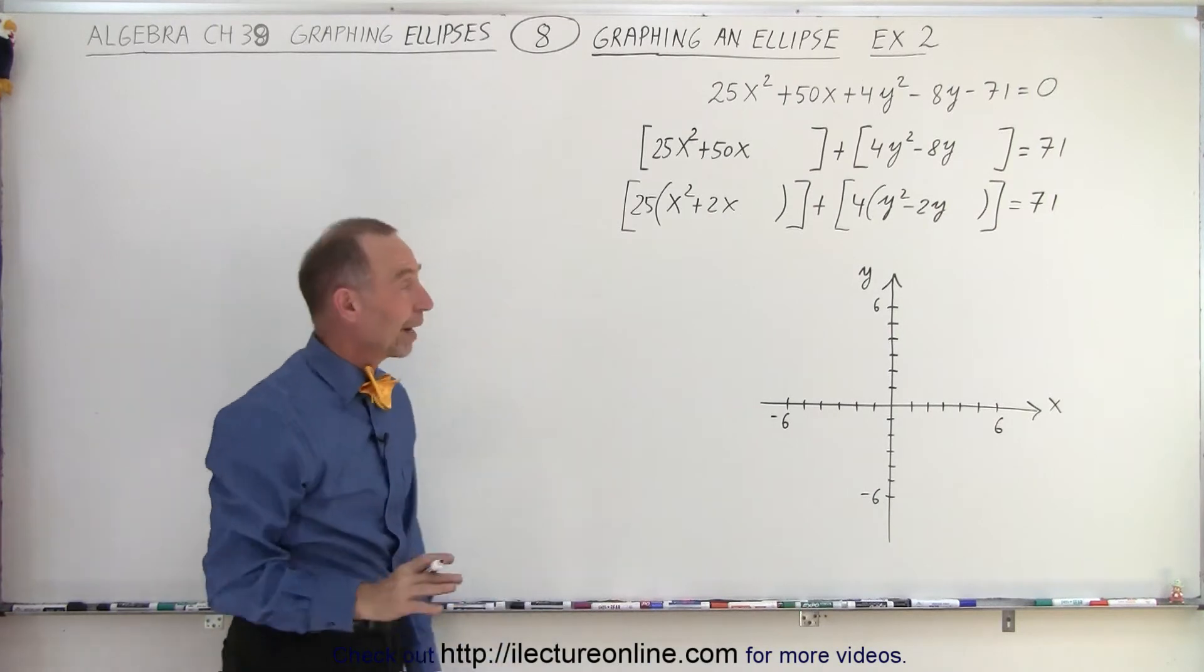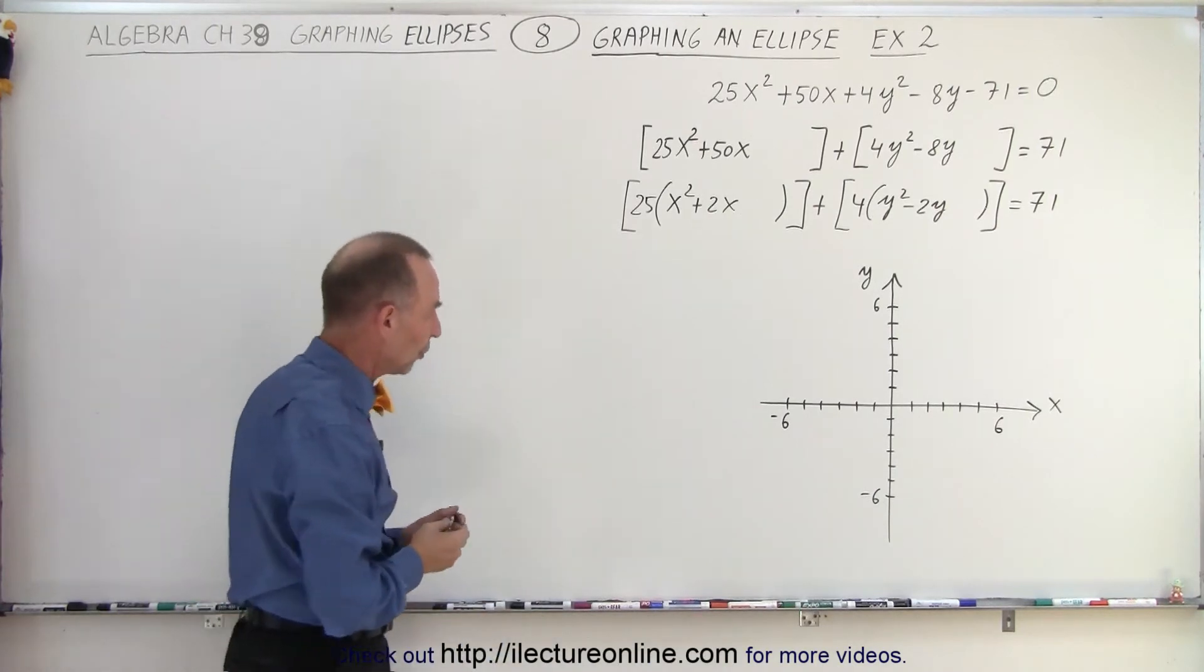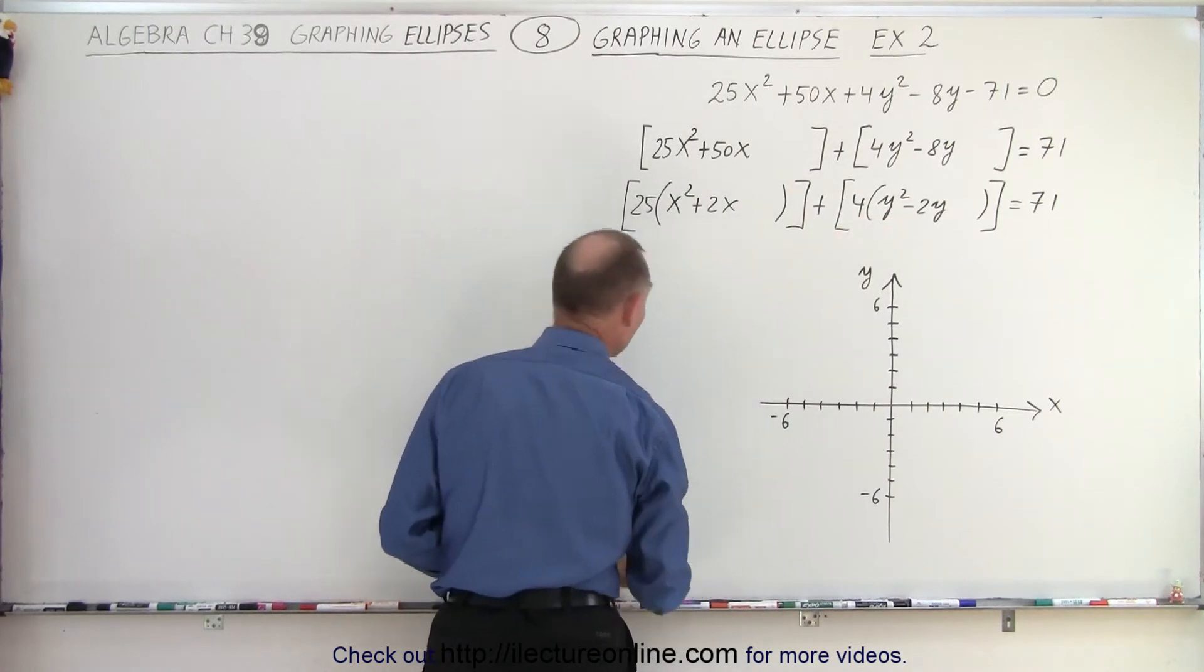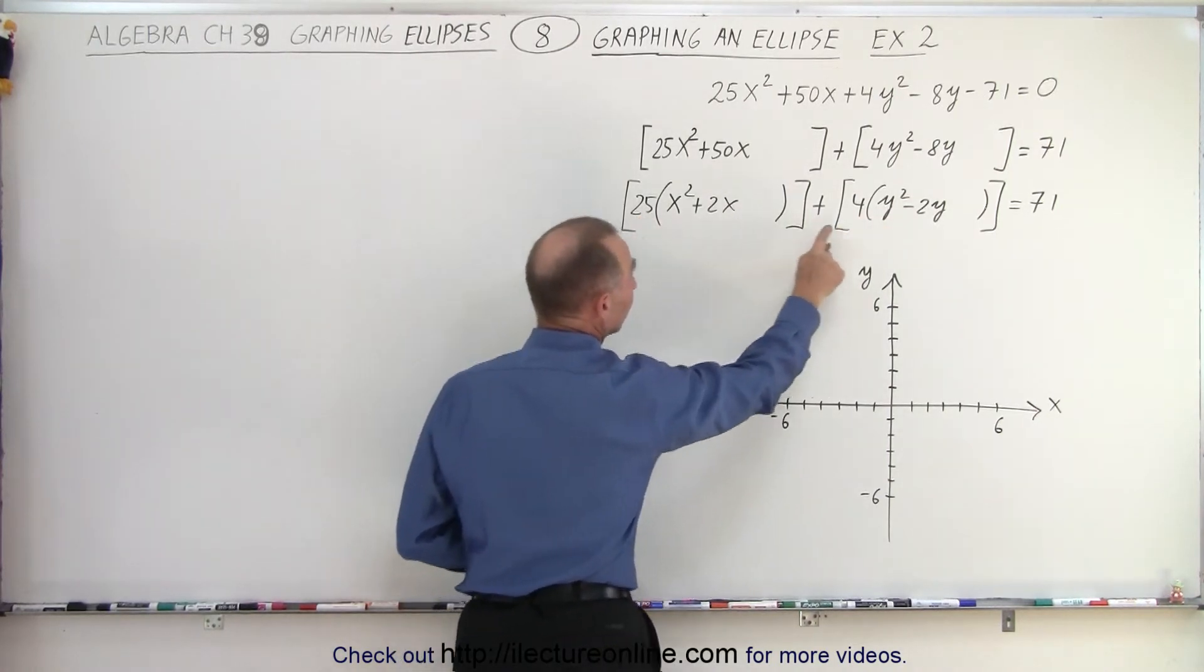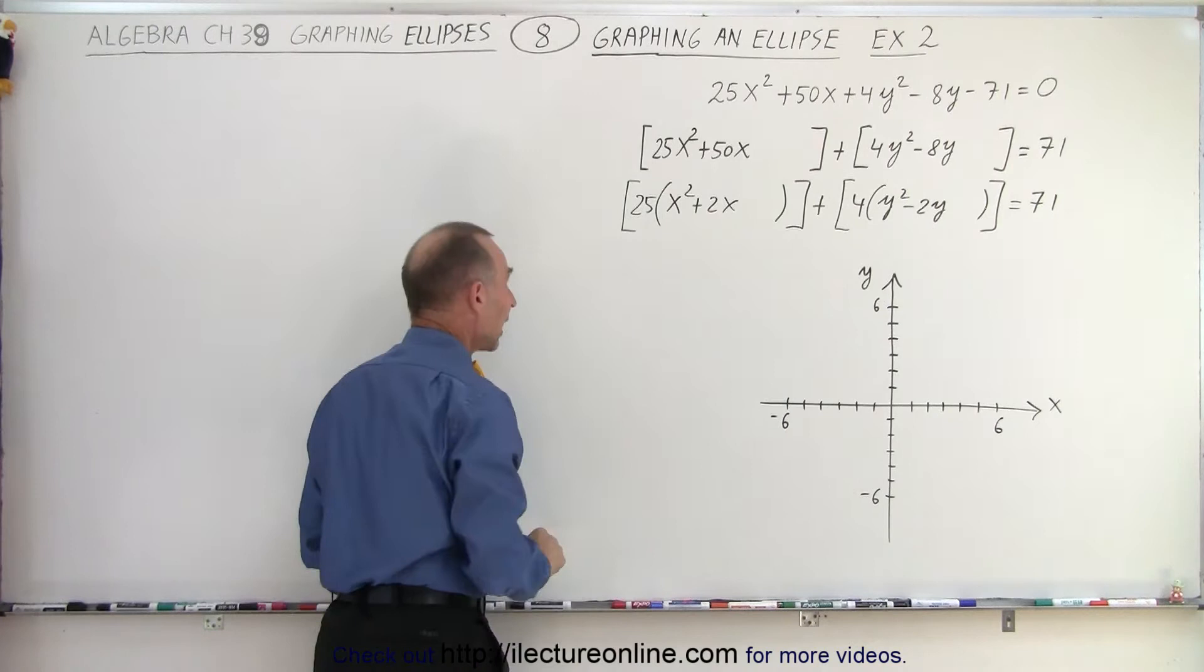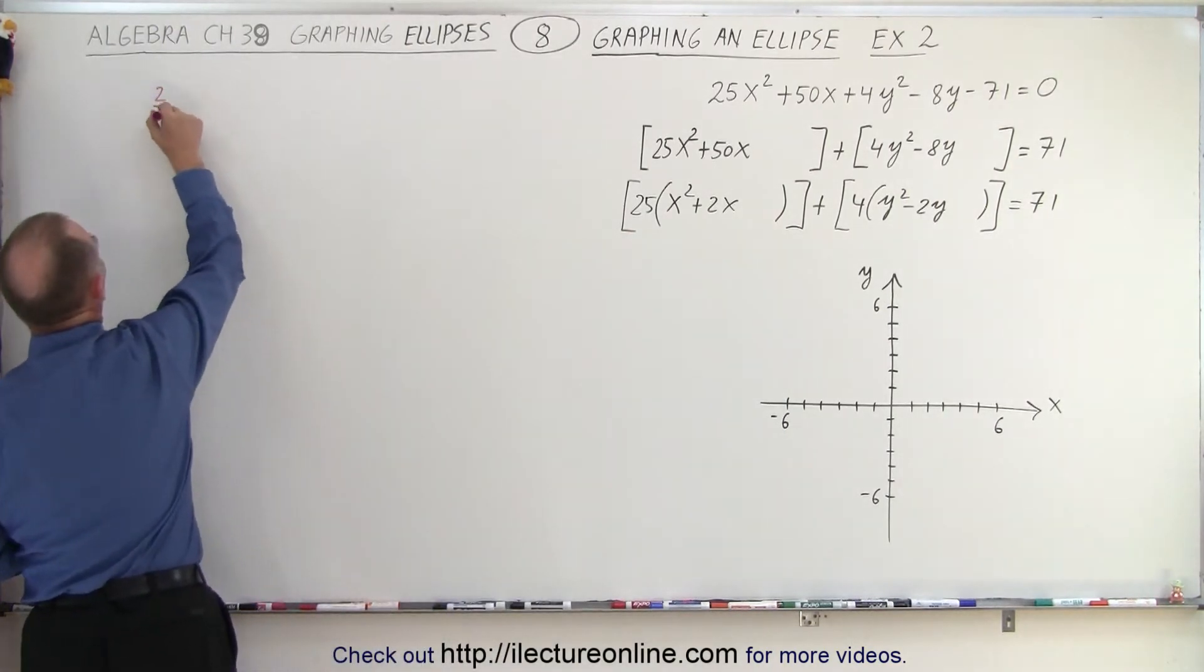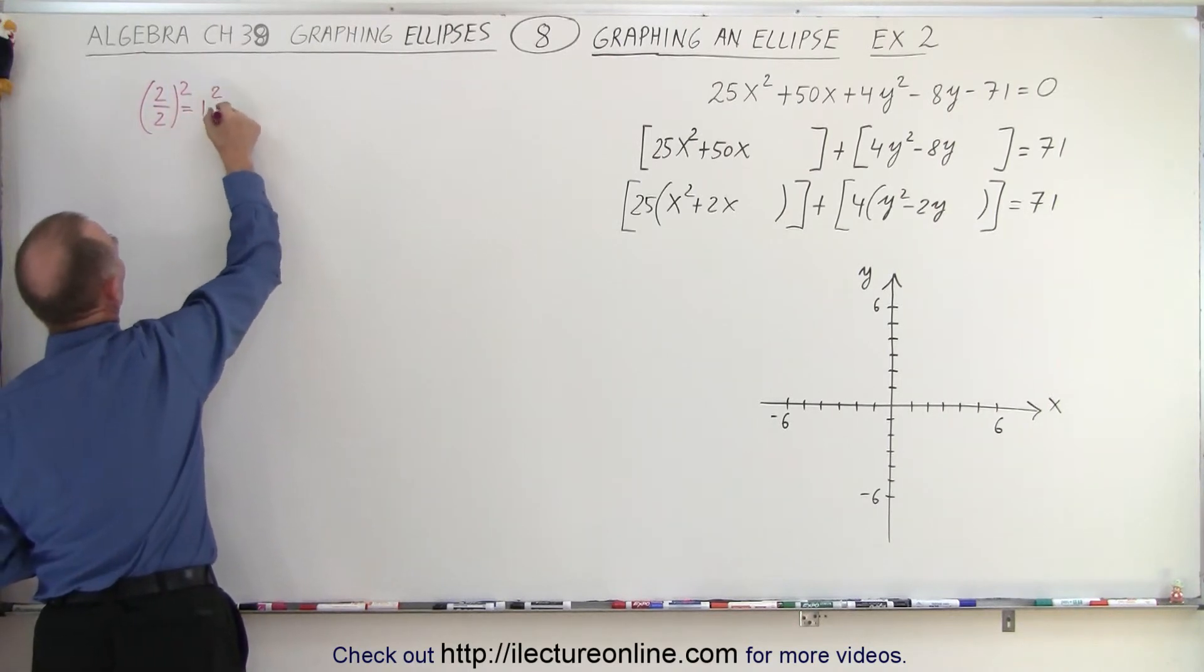Now we're ready to complete the square. The trick is to take half the middle term squared and add it to both sides. But don't forget, we're multiplying times the number here, we need to take that into account. So for the first one, we take 2 divided by 2, square it, that gives us 1² which is 1.